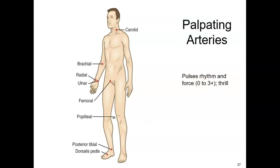We assess the carotid, brachial, radial, and ulnar arteries — though we don't generally check the ulnar pulse, so focus on radial — as well as the femoral, popliteal, posterior tibial (PT), and dorsalis pedis (DP). The posterior tibial pulse is at the medial malleolus, so make sure you are on the inside of the leg behind the ankle bone.